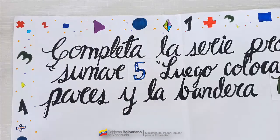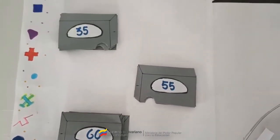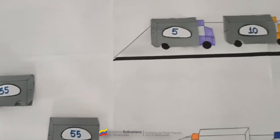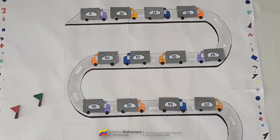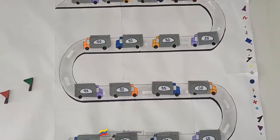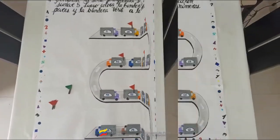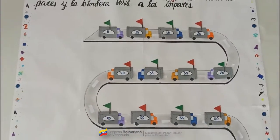El niño debe reconocer que el patrón se da al sumar 5. Al obtener el resultado, buscar en las fichas, que serán las cargas de los camiones, el número que sigue según el orden y colocarlo donde corresponde. Al completar toda la serie, hay que identificar los números pares e impares en los resultados obtenidos y colocar la bandera según sea el caso: rojo para los pares y verde para los impares.